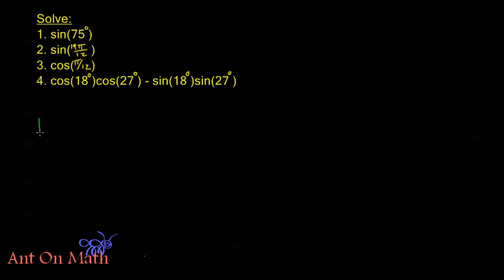For number one we want to solve sine of 75 degrees. This isn't an angle that we're familiar with. We know that in degrees we're familiar with 0, 30, 60, 45, and 90 — and in radians that's 0, pi over 6, pi over 4, pi over 3, and pi over 2. What we need to do is break up 75 by either adding or subtracting two angles that we're familiar with.